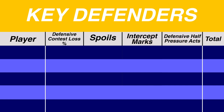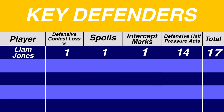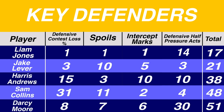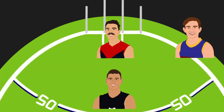The clear standout was Carlton's Liam Jones, who topped 3 of the stats to score just 17 points. Just behind him was Jake Lever, whose range of defensive skills shone through with 21 points, and he was well ahead of 3rd placed Harris Andrews, who claimed a spot in the back pocket.